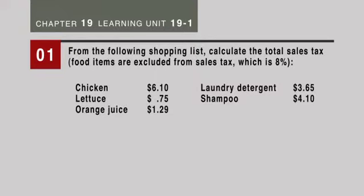As a matter of fact, some states don't have any sales tax whatsoever. So you have chicken at $6.10 — that's food — you have lettuce at $0.75, orange juice at $1.29, detergent at $3.65, and shampoo at $4.10.